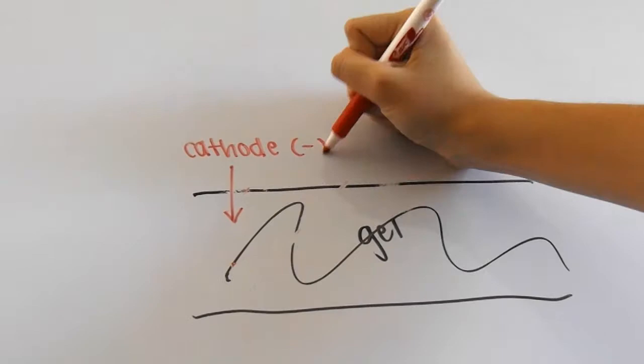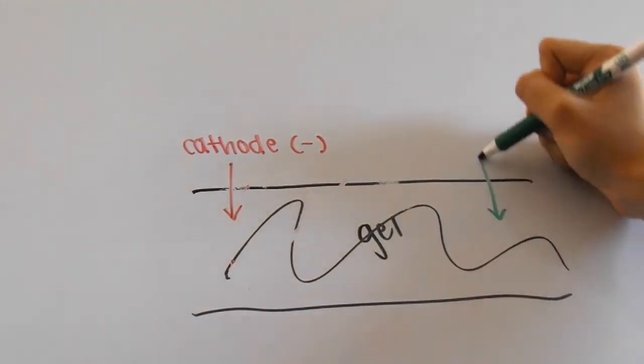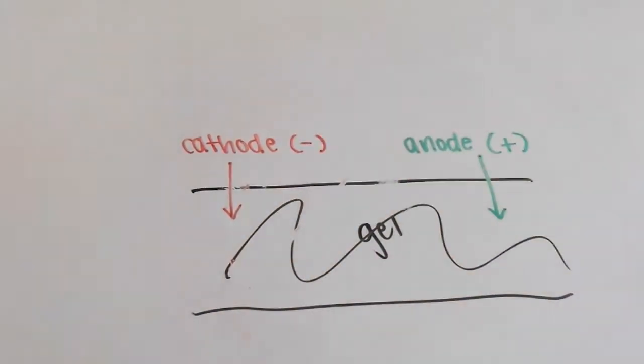Each side of the gel has a charge. On the cathode side, a negative charge runs through. On the anode side, a positive charge runs through.